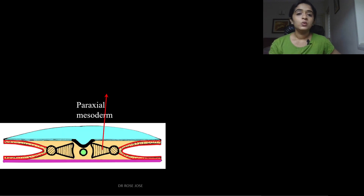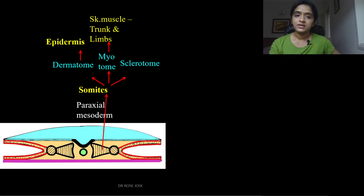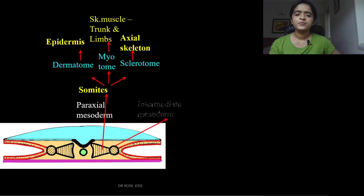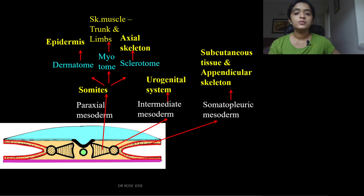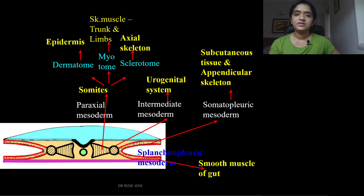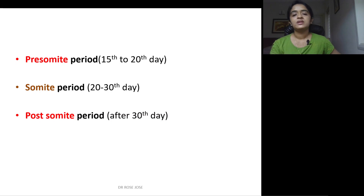The main derivatives of paraxial mesoderm are the somites, made up of three segments: dermatome, myotome, and sclerotome. Dermatome gives rise to epidermis, myotome gives rise to skeletal muscle of the trunk and limbs, and sclerotome gives rise to the axial skeleton. Intermediate mesoderm gives rise to the urogenital system. The somatopleuric mesoderm gives rise to subcutaneous tissue and appendicular skeleton, and the splanchnopleuric mesoderm gives rise to smooth muscle of the gut.